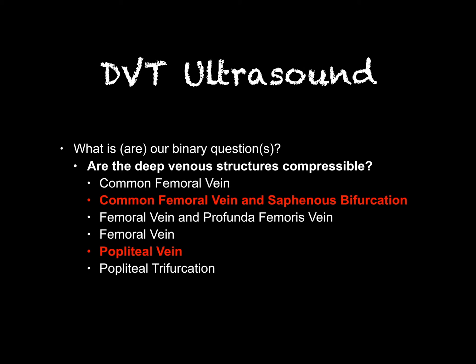There is literature supporting what people call a two-point ultrasound, but I think that's a misnomer. What we really need is a two-area ultrasound — that includes the area around the saphenous junction with the femoral vein and the popliteal vein. When I teach residents and when I do this myself, I evaluate from the common femoral vein all the way down to the popliteal trifurcation using compression. I don't think it adds much time, and that's how we'll review it today.